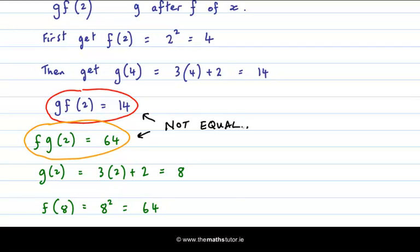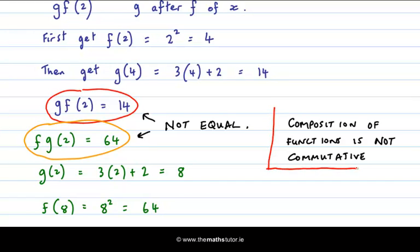So we say composition of functions is not commutative. What does that mean, that it's not commutative? Well, it means that the order is important. If we do g after f, it is not necessarily the same as f after g. To commute means generally to go to work and come back. In mathematics, it means that you go and you come back and it's the same. It's the same both ways, both directions.